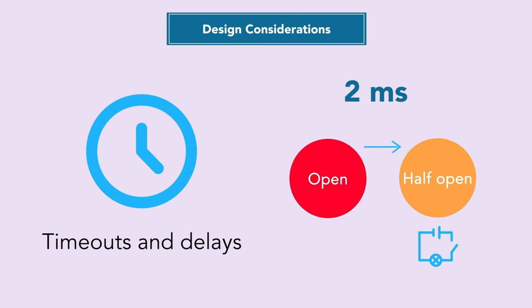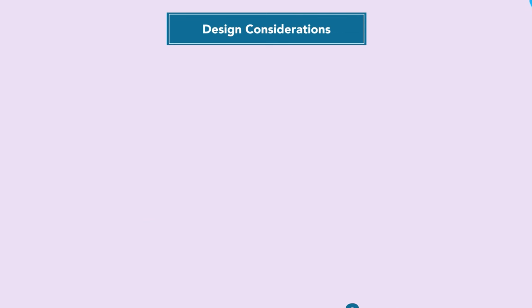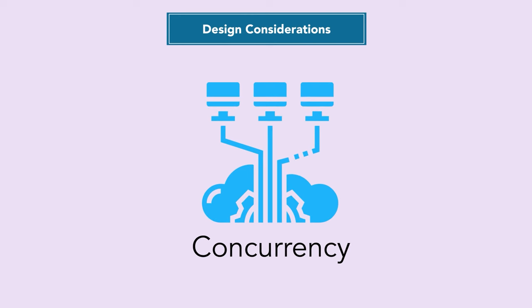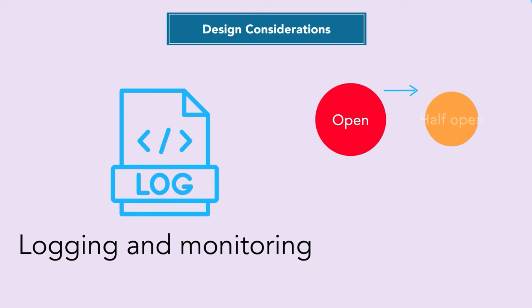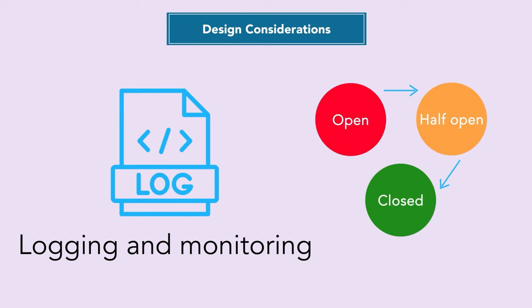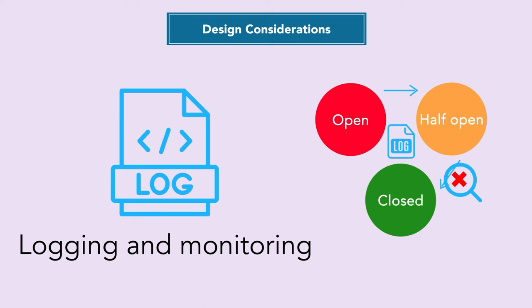In the circuit breaker design pattern, you should also consider concurrency, since one service may be called by multiple other services simultaneously. Make sure you take special care with logging and monitoring of different states — when states switch, what happens at each state. Log everything with context so you can detect anomalies if the circuit breaker is not behaving as expected, and use that data to track and fix recurring failures in your system.